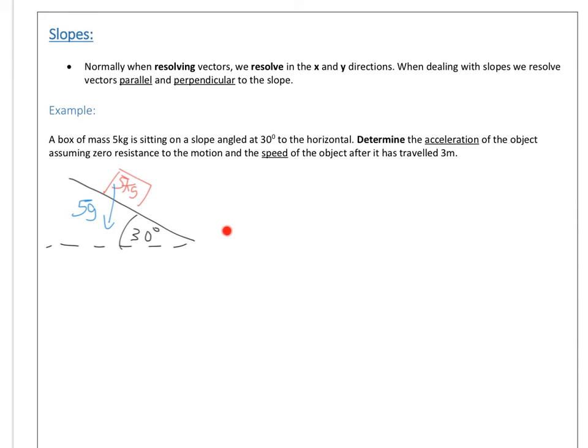So the key thing to realize here is the box is free to move in this line of motion here. It can't move into or out of the slope. So that's why we resolve parallel, which is this direction, and perpendicular, because it's free to move in the parallel direction. So let's build ourselves a vector triangle. So we've got the weight force, which is 5g.